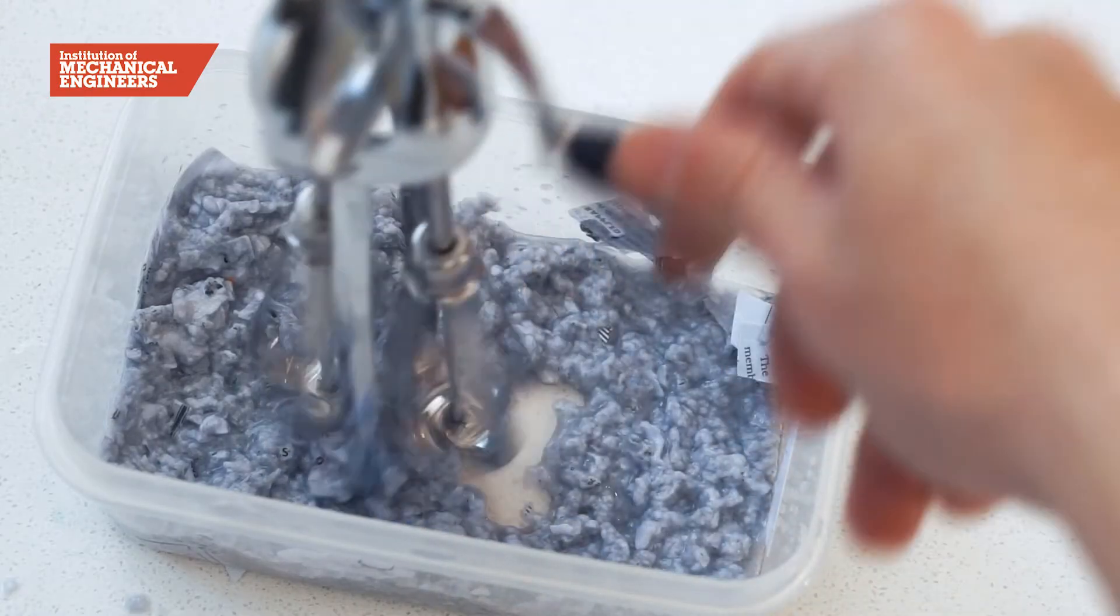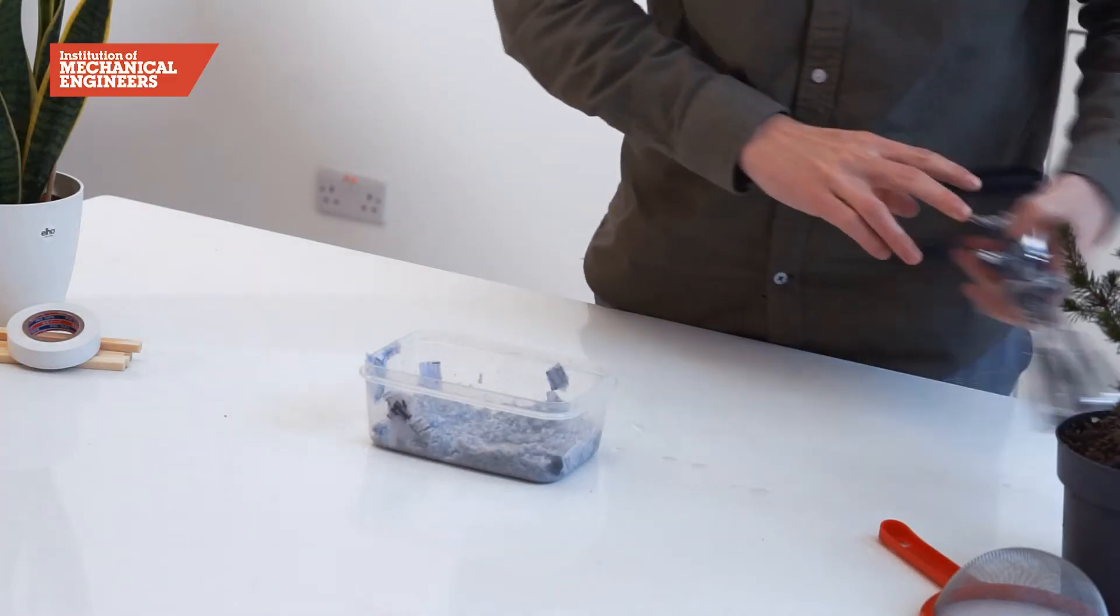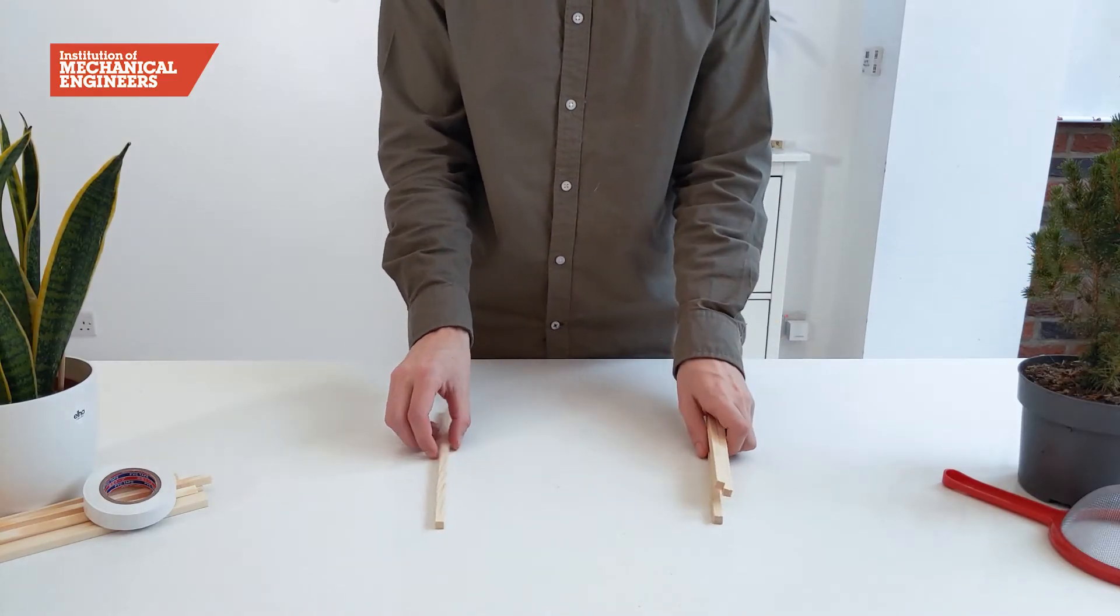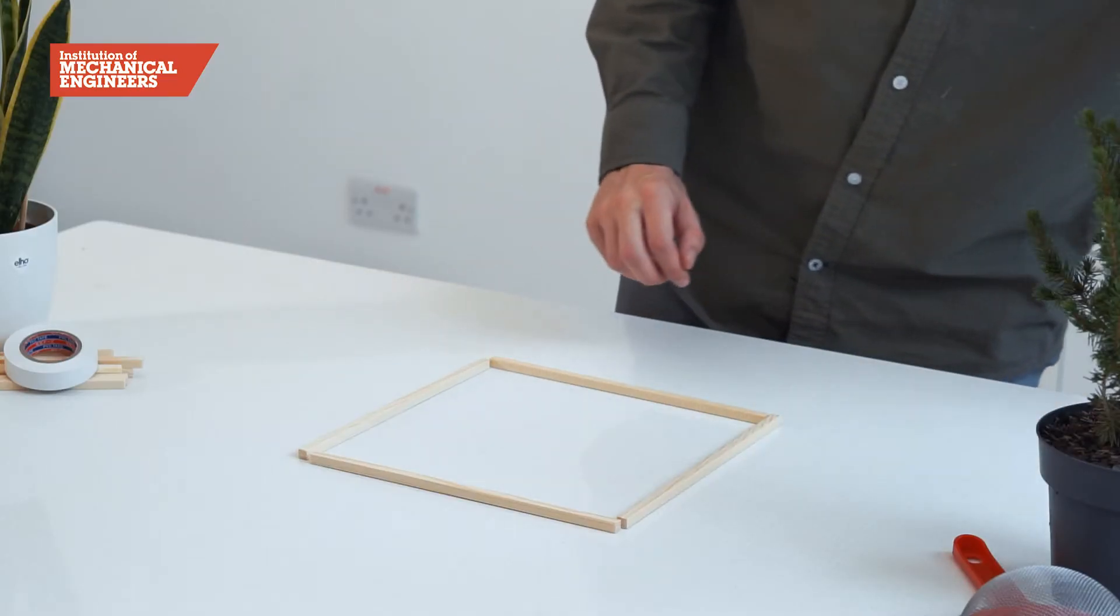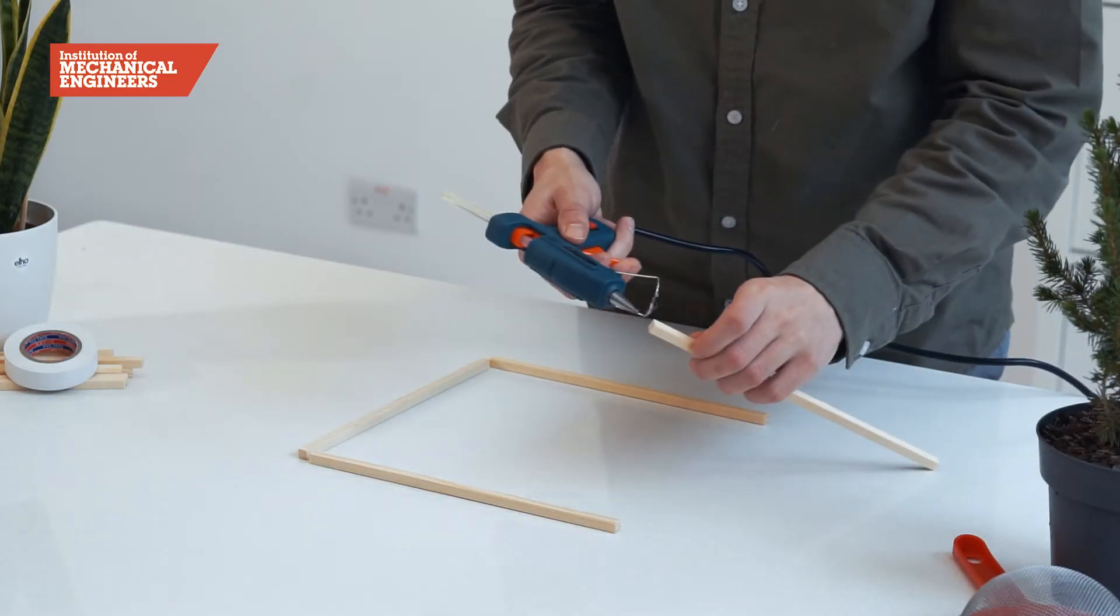While the paper pulp is soaking you can make your screen. First take four lengths of balsa wood and arrange them in a square. Glue each corner with a hot glue gun so that it creates a strong frame.